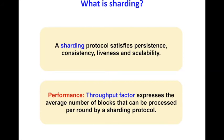We further introduce a new performance metric called the throughput factor, which expresses the average number of blocks that can be processed per round by a sharding protocol. The throughput factor depends on three variables: how fast the chain grows, the quality of the chain (how many blocks come from honest parties compared to adversarial blocks), and the degree of parallelism. The degree of parallelism of a static protocol highly depends on the number of shards and the average size of transactions. In essence, we need to estimate how many times we need to run consensus for each valid transaction until that transaction is in the persistent part of the blockchain — that is, deep enough, k blocks deep.